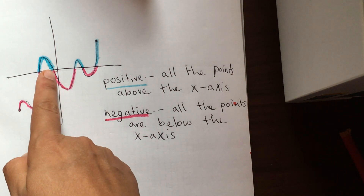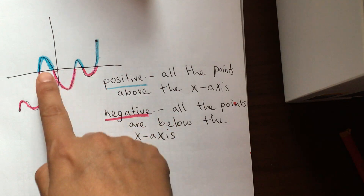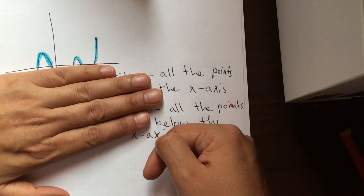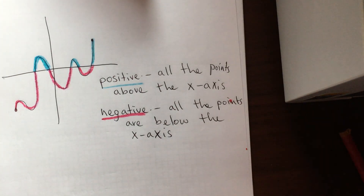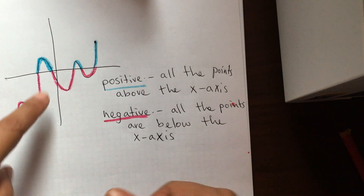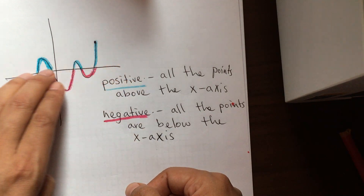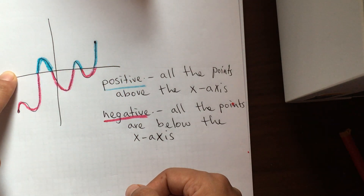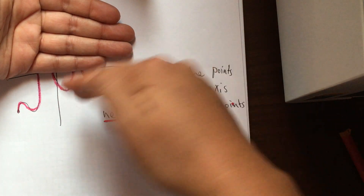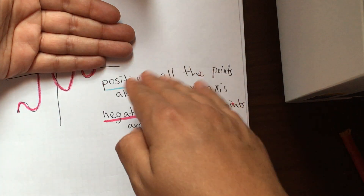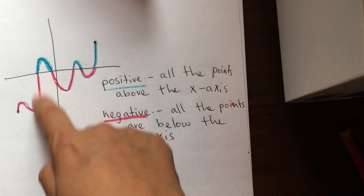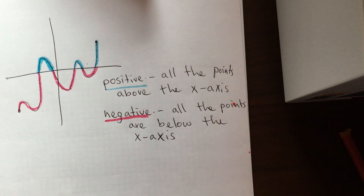Notice it's not about whether the graph is going down or going up — it's just whether it's below or above the x-axis. Some students remember this as: anything above sea level is positive, and anything below the water is the part where the graph is negative.